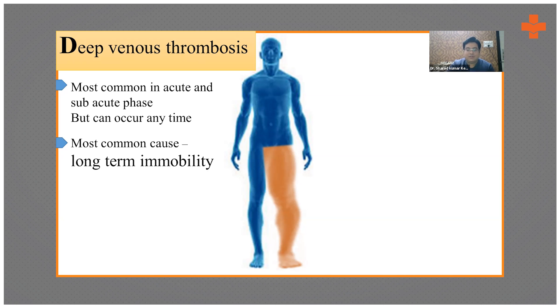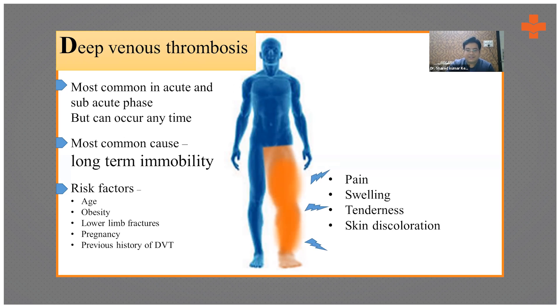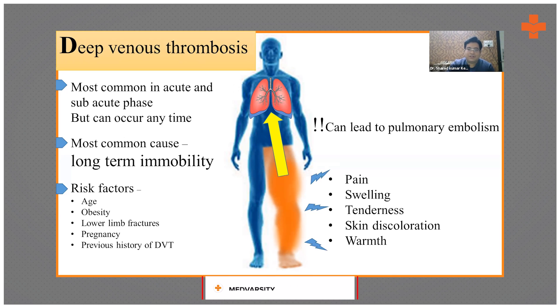Risk factors include age, obesity, lower limb fractures, pregnancy, and previous history of DVT. Patient will present with severe pain, swelling, tenderness, skin discoloration, and increased warmth. This can lead to pulmonary embolism, which is very important.